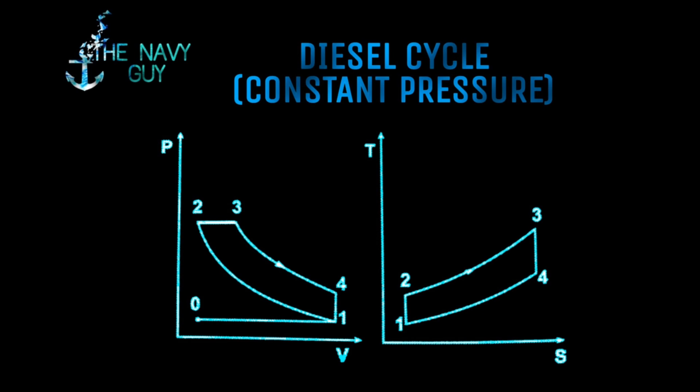From 3 to 4, air is expanded isentropically. From 4 to 1, heat is rejected at constant volume.